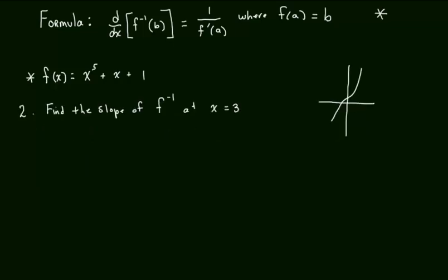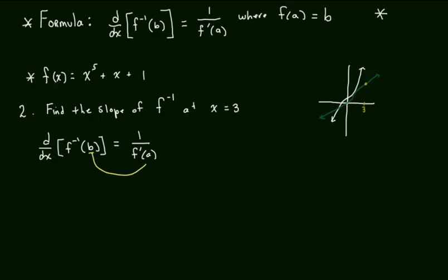Now we're going to find the slope of f inverse at x equals 3. The idea is to not try to find that inverse function, but to utilize the formula. Suppose the function looked like the graph here — the inverse of that would be a reflection over y equals x. So we're saying: what is the slope of that inverse at x equals 3 without actually having to find that inverse function? The key to this problem is seeing that this b is not the same as this a — that is the most often-made mistake.